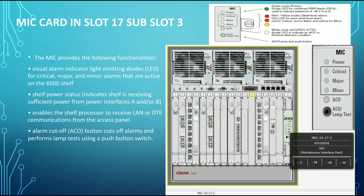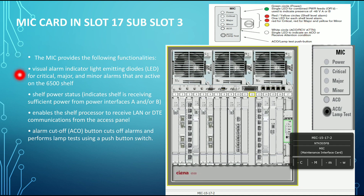The MIC (Maintenance Interface Card) provides visual alarm indicators — LEDs for critical, major, and minor alarms active in the shelf — along with self power status, indicating whether the shelf is receiving sufficient power from power interface A and power interface B. It enables the shelf processor to receive LAN or DT communication from the access panel. An ACO lamp test push button is provided to cut off the alarm and perform a lamp test.